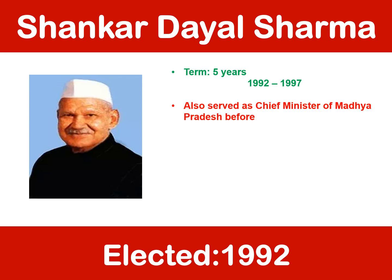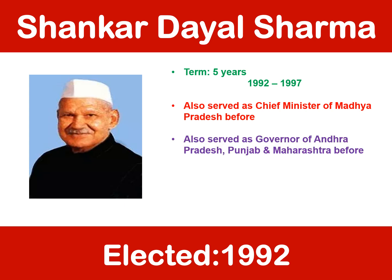The next president was Shankar Dayal Sharma. He was elected in 1992 and also served as the governor of Andhra Pradesh, Punjab, and Maharashtra. So if a question comes — who was the president of India as well as governor of three states — the answer is Shankar Dayal Sharma. He was also a candidate of Indian National Congress.